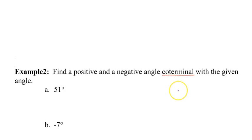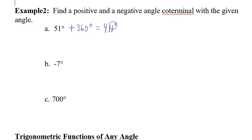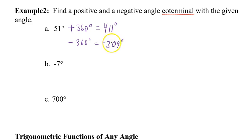Example A: find a positive and negative coterminal angle with 51 degrees. Adding 360 gives 411 degrees; subtracting 360 gives negative 309 degrees. If you sketch those, you'll see they all end up in the same position. You could add or subtract 360 again to get additional coterminal angles.